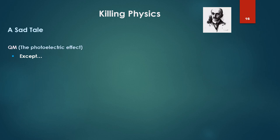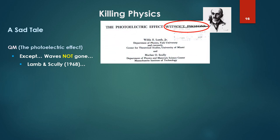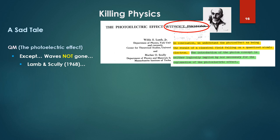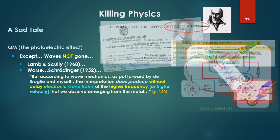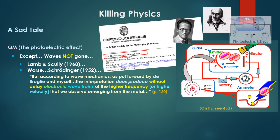And as Schrodinger noted in 1952, this was, and I'm afraid still is regarded as convincing evidence of the instantaneous transfer of whole quanta of energy from the light to the electron. And that instantaneity of transfer is a fundamental problem. It's a myth. So waves gone. Ether gone. And photons now here. Quanta now here. The start of quantum mechanics. Just that easy. Except waves not gone. There's a paper I noted by Lamb and Scully in 1968: The photoelectric effect without photons. To quote: In conclusion, we understand the photo effect as being the result of a classical field falling on a quantized atomic electron. The introduction of the photon concept is neither logically implied by nor necessary for the explanation of the photoelectric effect.